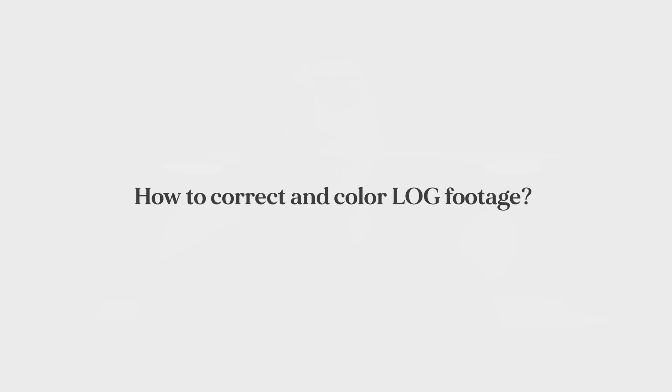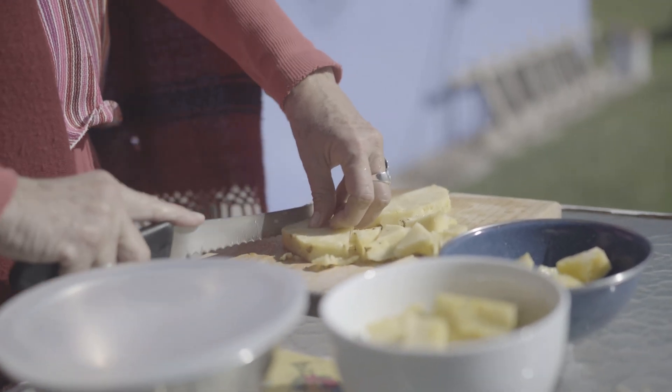Today's video is a very requested one throughout my history on YouTube — it's how to correct and calibrate log footage. Log footage is a gamma curve; it's the way your camera records video to achieve the best dynamic range your sensor can handle, mimicking the dynamic range of cinema cameras. It does this by bringing down the highlights and whites, and bringing up the blacks and shadows, resulting in a very flat image with no contrast and no saturation.